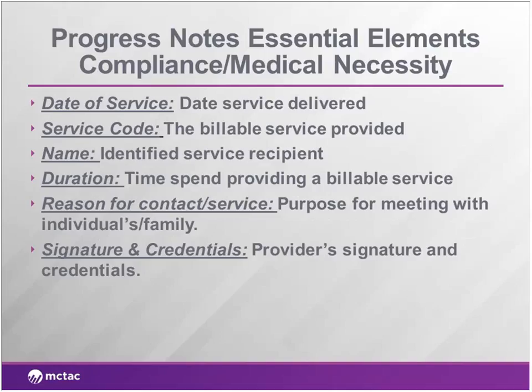Minimally we need to include the date of service — the date you actually delivered the service. Usually there's a service code for the reimbursable service you're providing, the name of the identified service recipient, duration and time spent providing that service, your reason for contact, the purpose of meeting with the individual or family — which is usually tied to what you assessed and the treatment plan. And lastly, your signature and credentials so you have the authority to provide this service. You need to ensure that you sign the progress note.